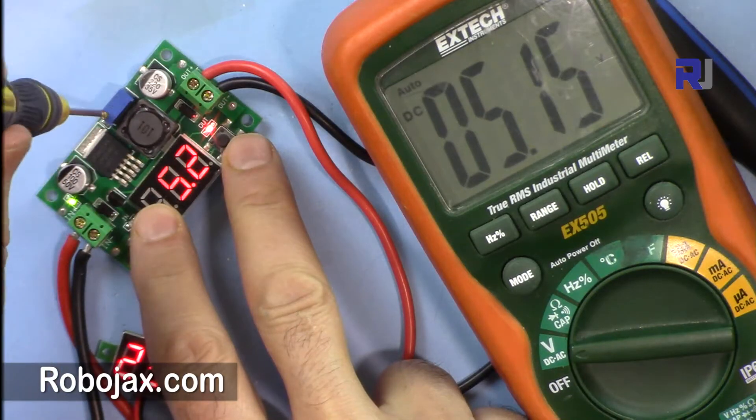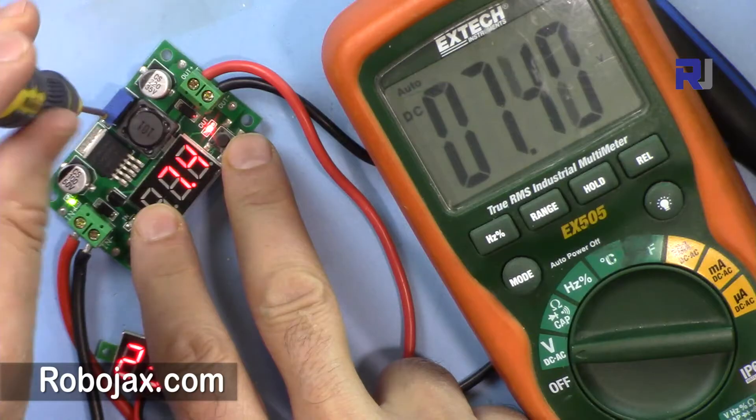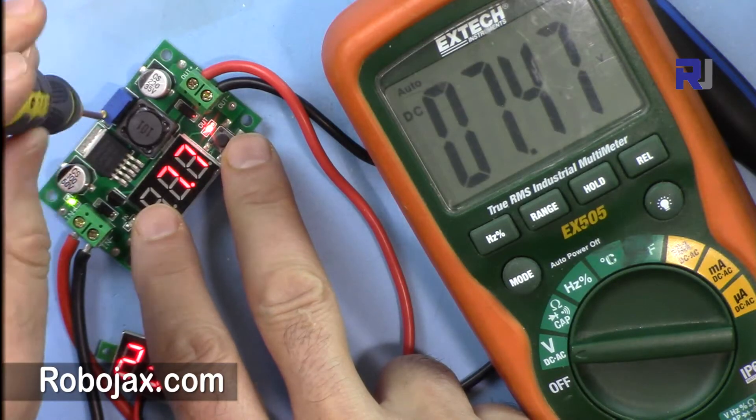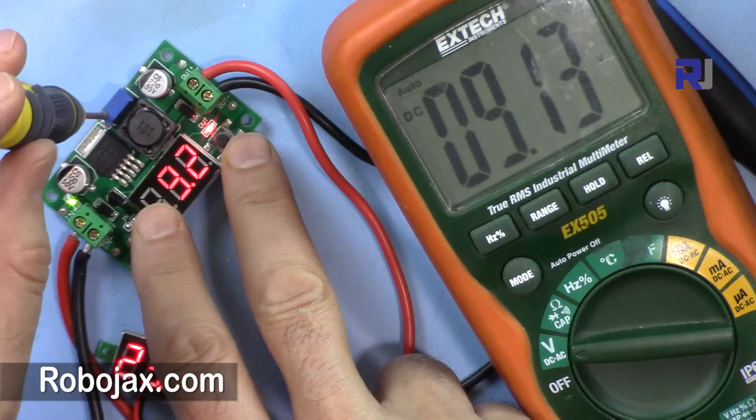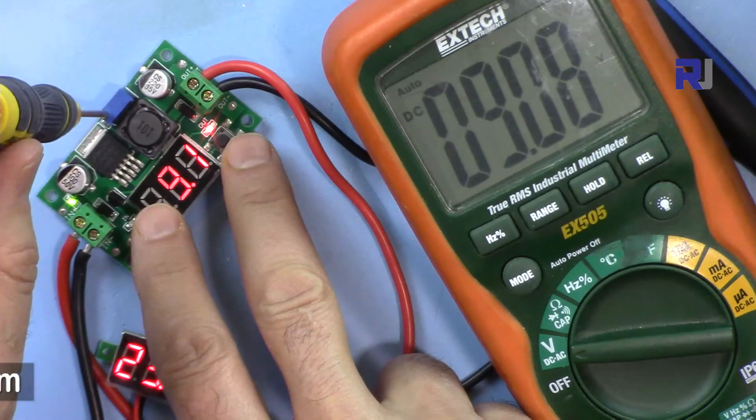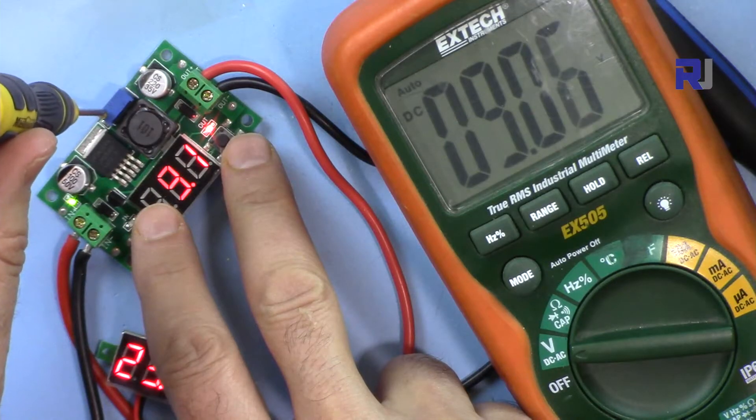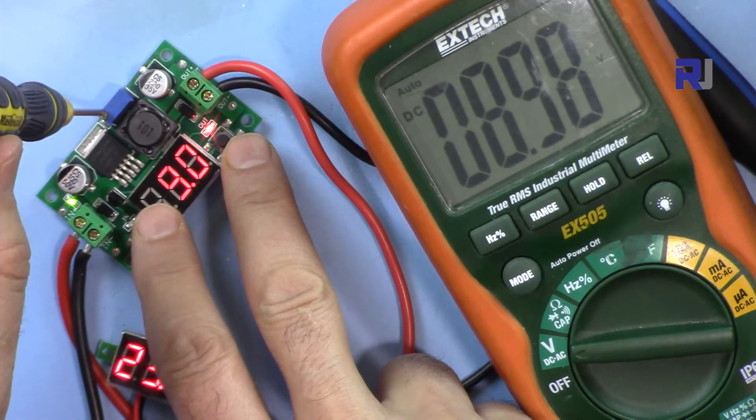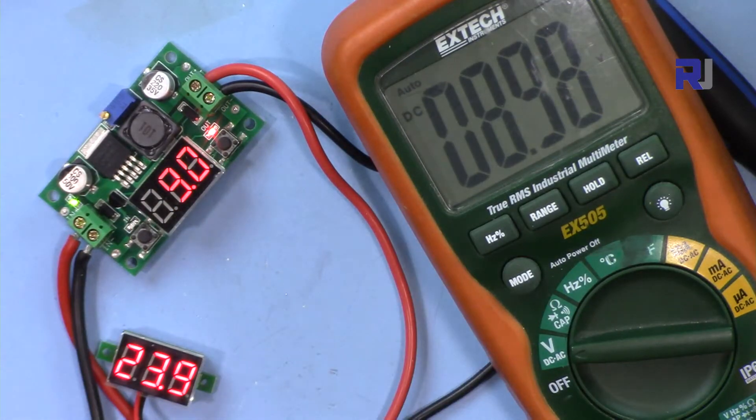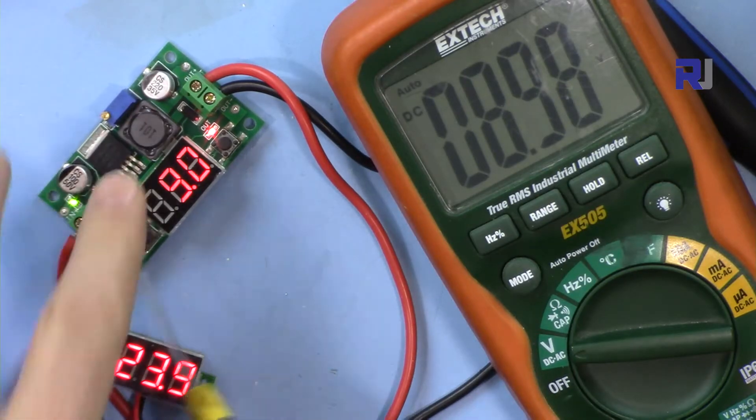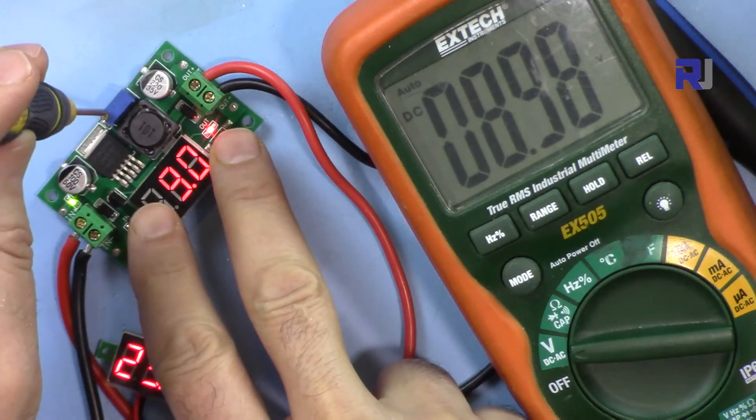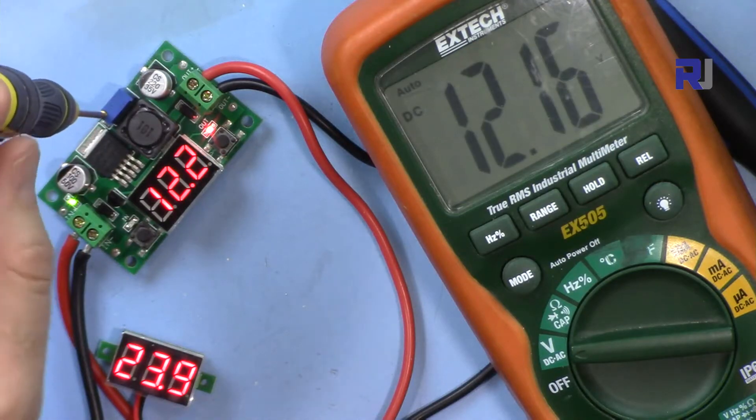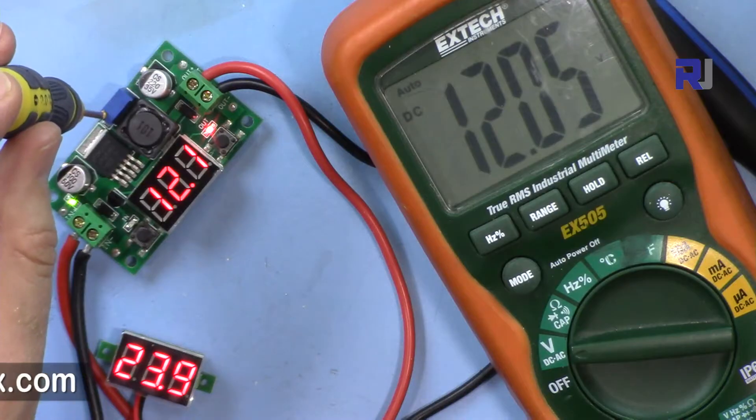So now it's almost 24 volts and the output was very stable, did not change. Let's say you want to get 9 volts. So 8.9, now we have 24 volts of the input and 9 volts of output. Now let's get 12, let's see if we can get 12. So it now gives 12 volts.